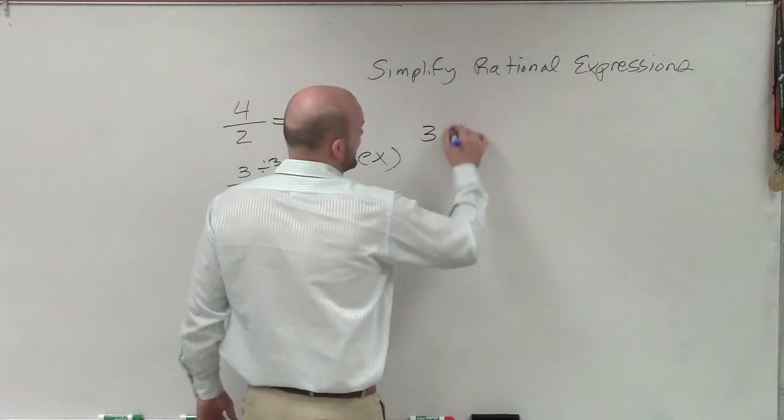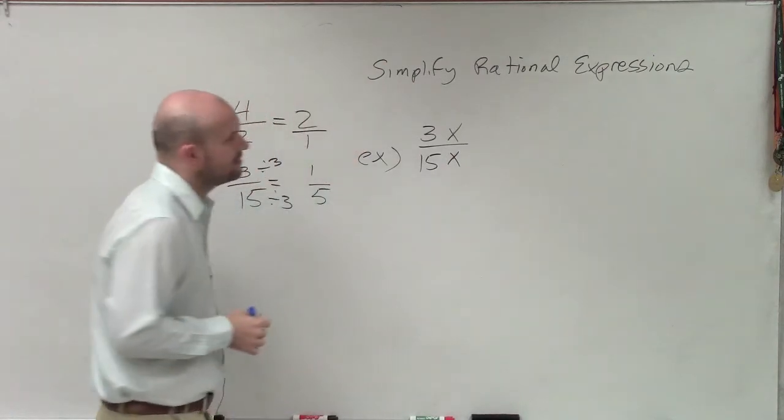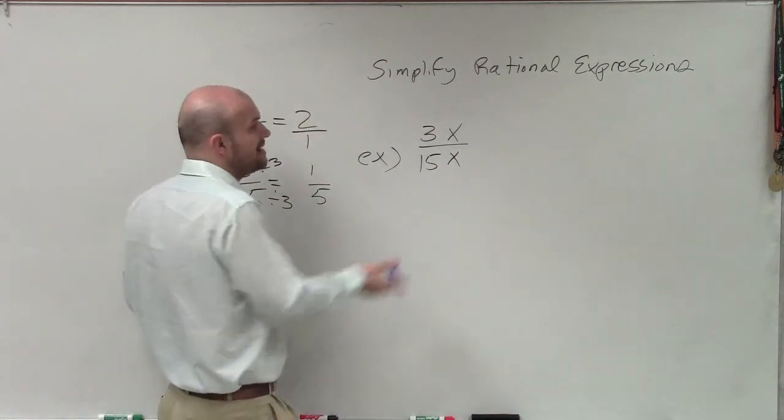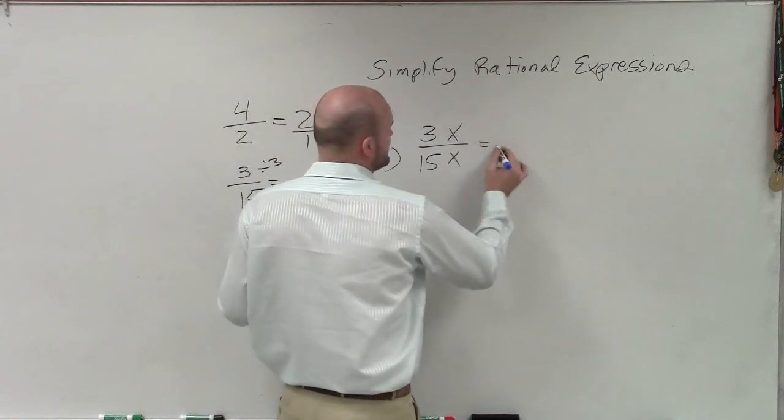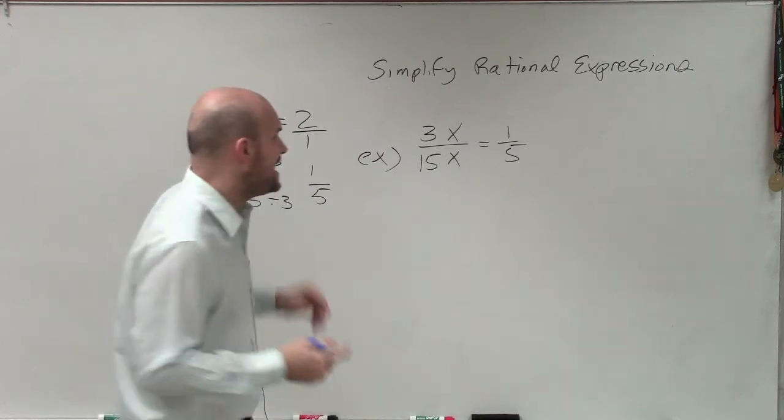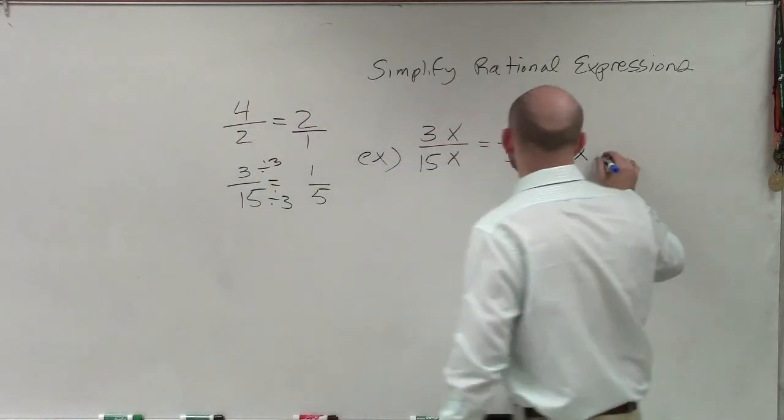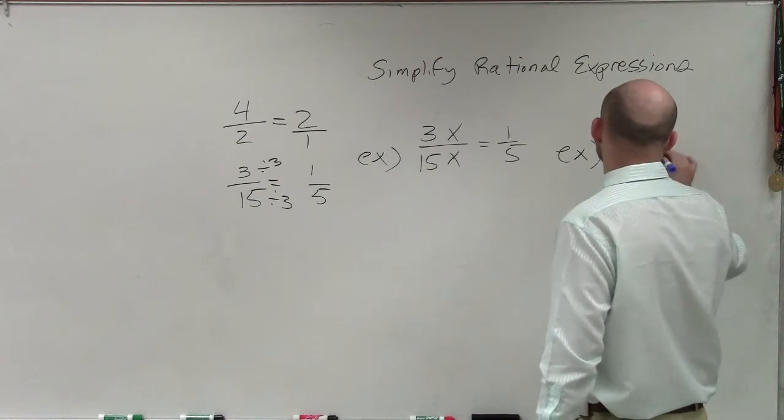But now, what if I just add the 3x divided by the 15x? So in this case, we're still going to divide. But now I have x divided by x, which is going to be 1. So this can be reduced down to 1 fifth as well. But now, let's go and change this up again. And let's do 3x squared divided by 15x.